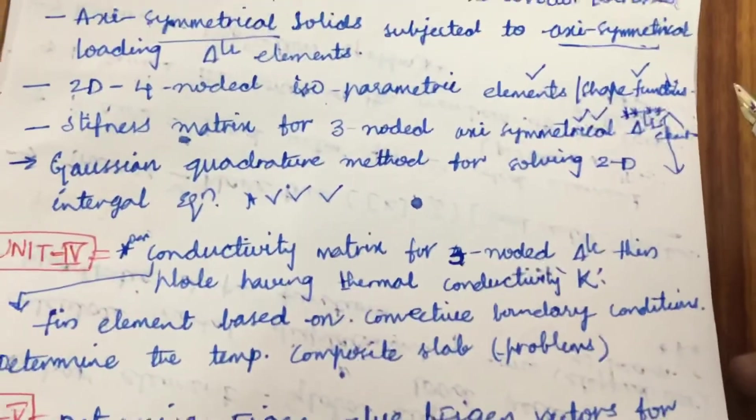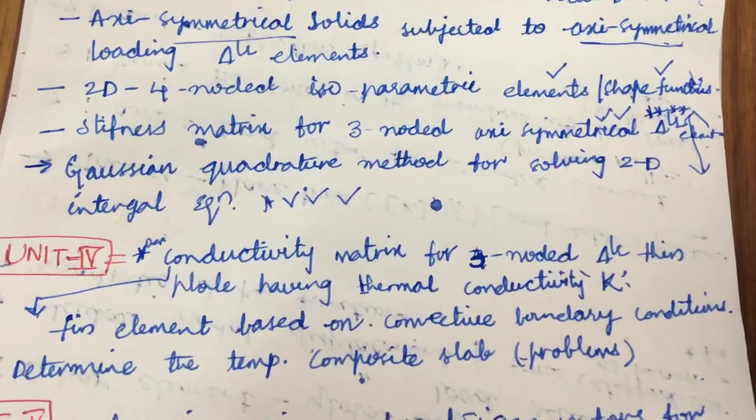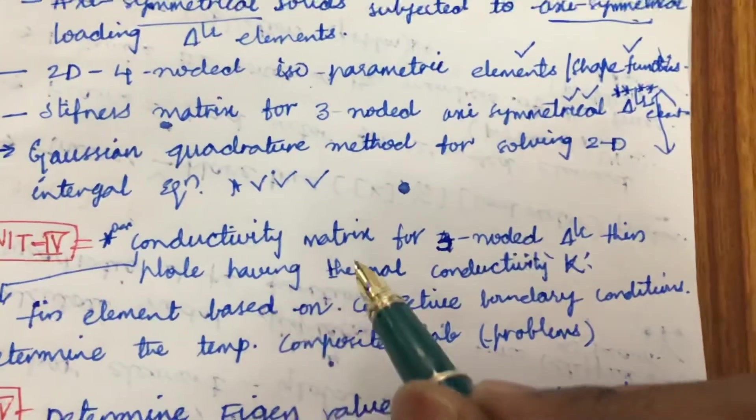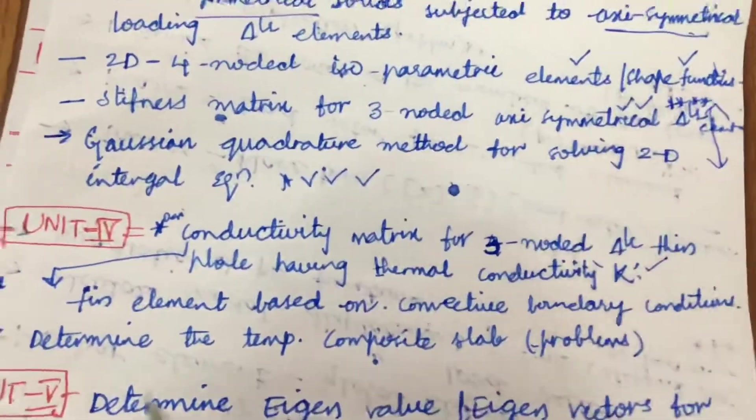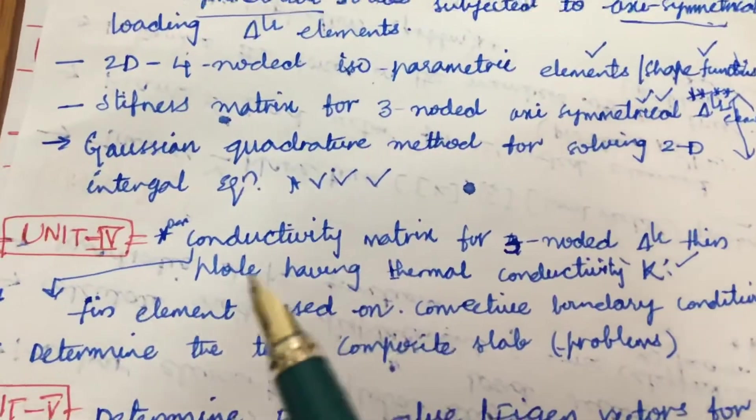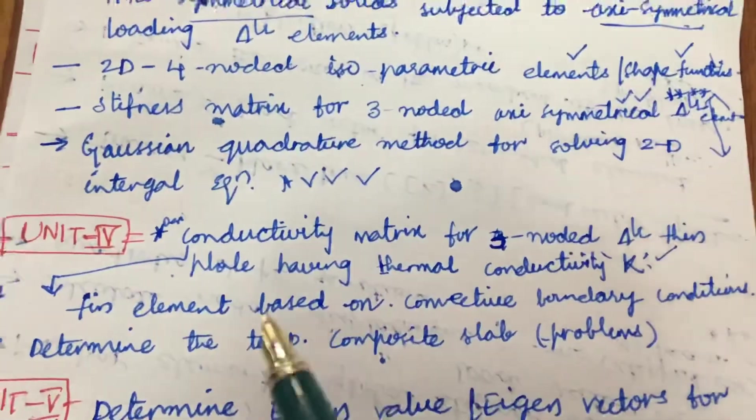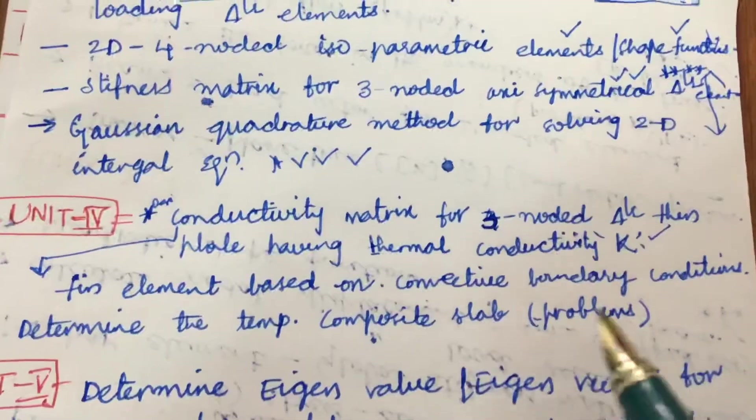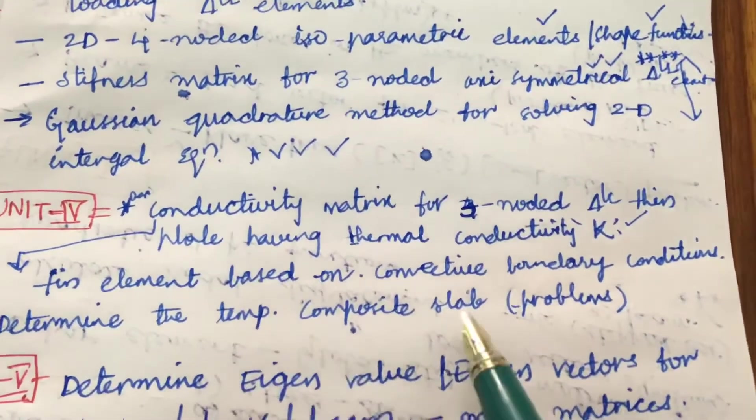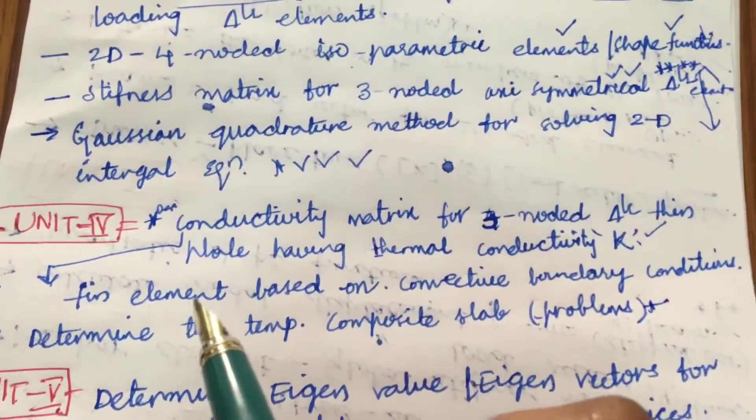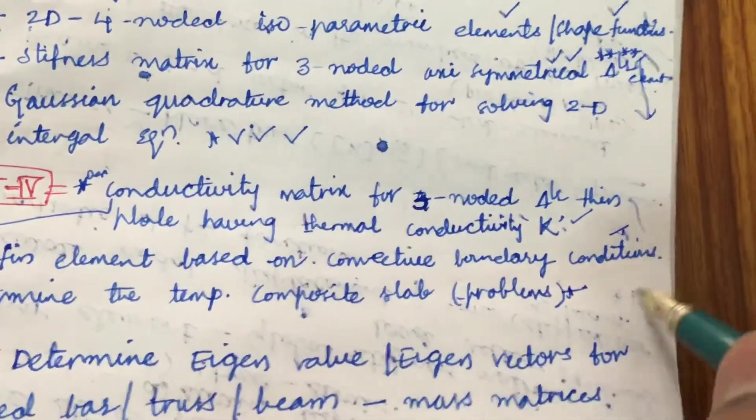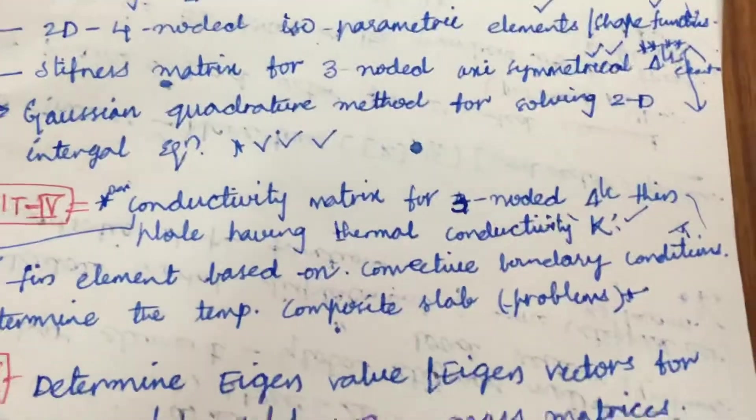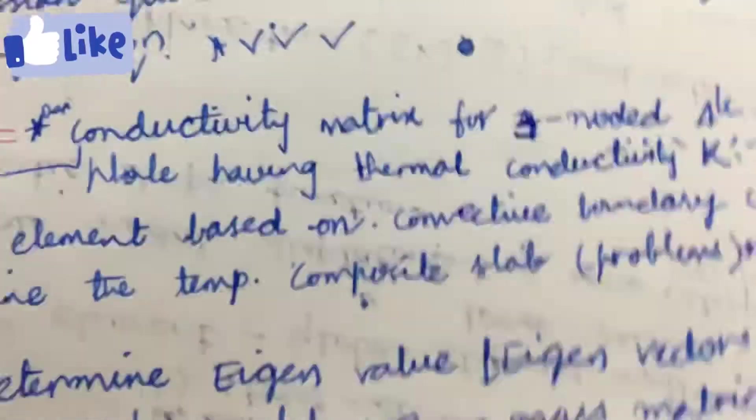Later, the fourth unit is all related to heat and thermal. Conductivity matrix for three-nodded triangular thin plate having thermal conductivity. This is all about heat transfer applying the concept onto finite element methods on different composite slabs as well as bars. Later, determine the temperature of the composite slab and problems related to it, and derive the conductivity matrix for a fin element based on connectivity boundary conditions. If you are perfect with these concepts, for sure you will be getting one derivation or problem. Many times from the fourth unit, the question is asked direct and that is 15 marks.